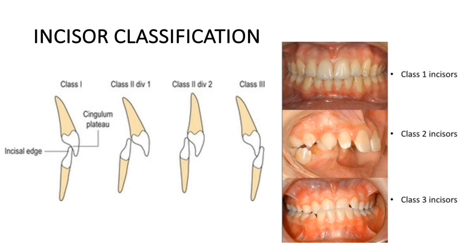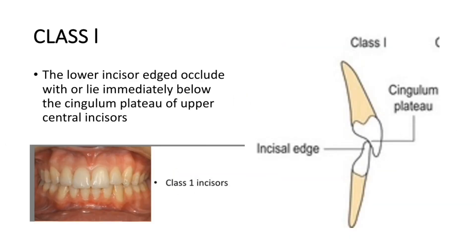On the right side you can see clinical pictures. Just as the molar classification is divided into three classes, the incisor classification is also divided into three classes: Class 1 incisors, Class 2 incisors, and Class 3 incisors.